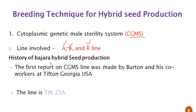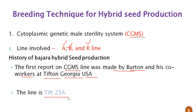The history of pearl millet or Bajra hybrid seed production: the first report of the CGMS cytoplasmic genetic male sterility line was made by the scientist Burton and his co-workers at Tifton, Georgia, USA. The male sterile line is hence named Tif-23, which is the male sterility source for pearl millet.